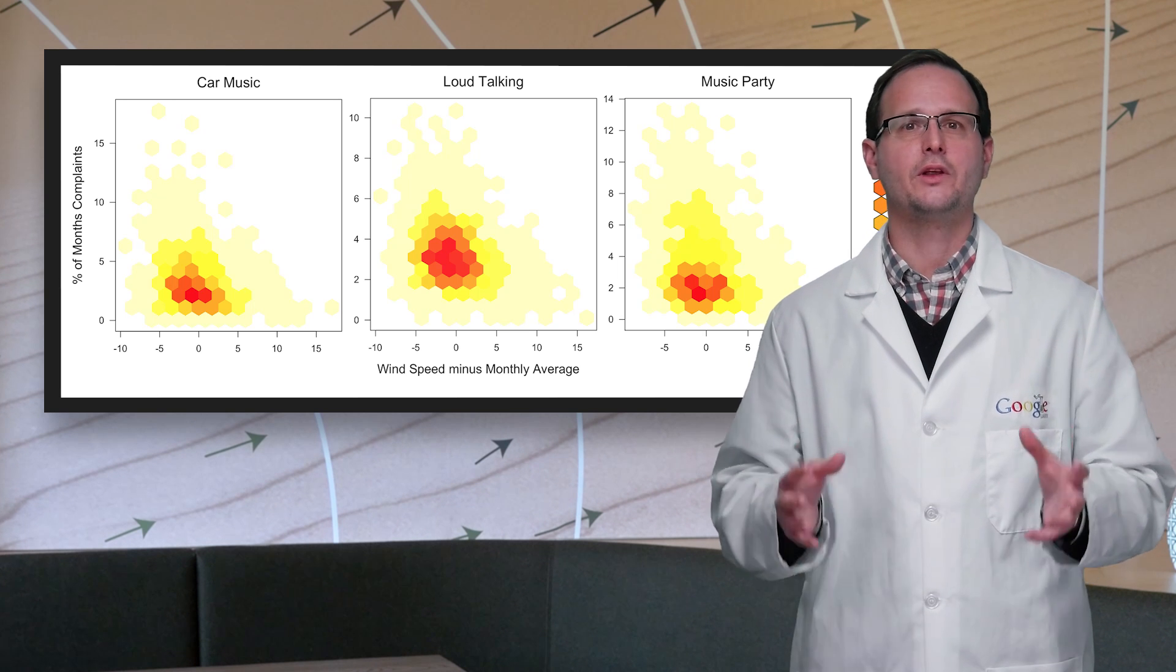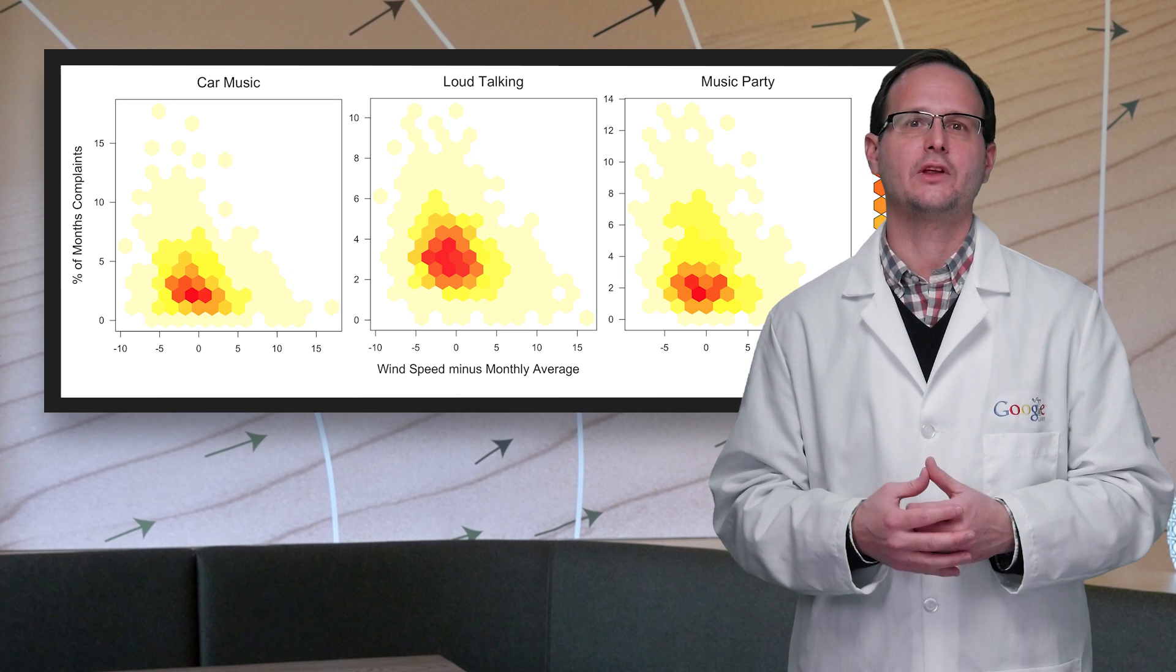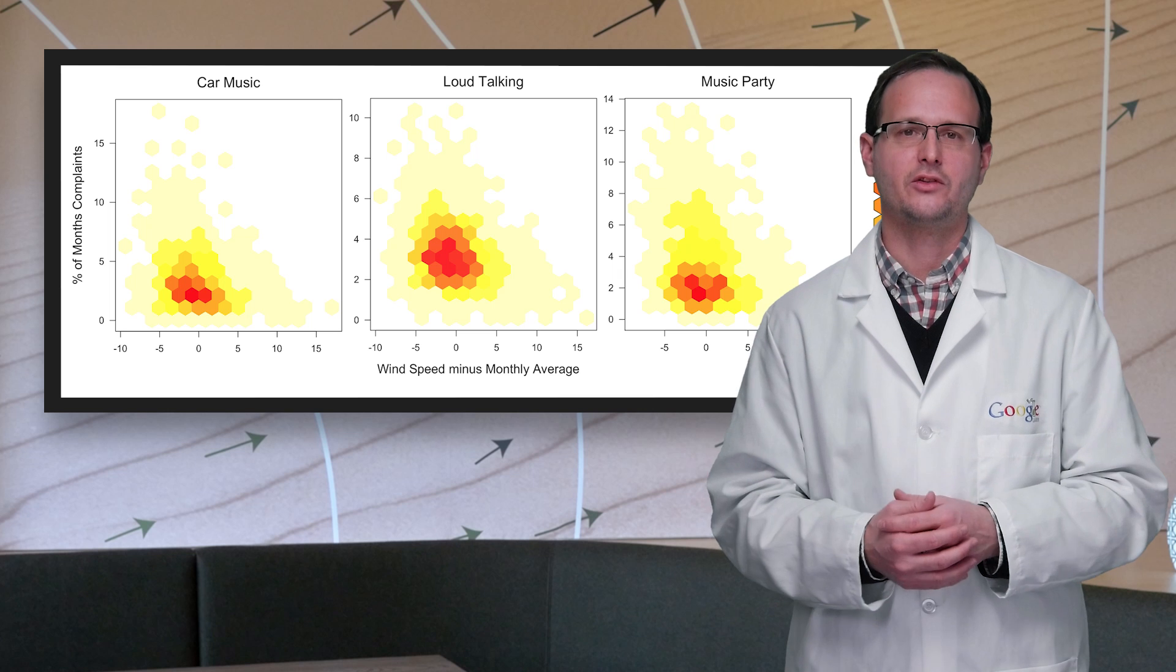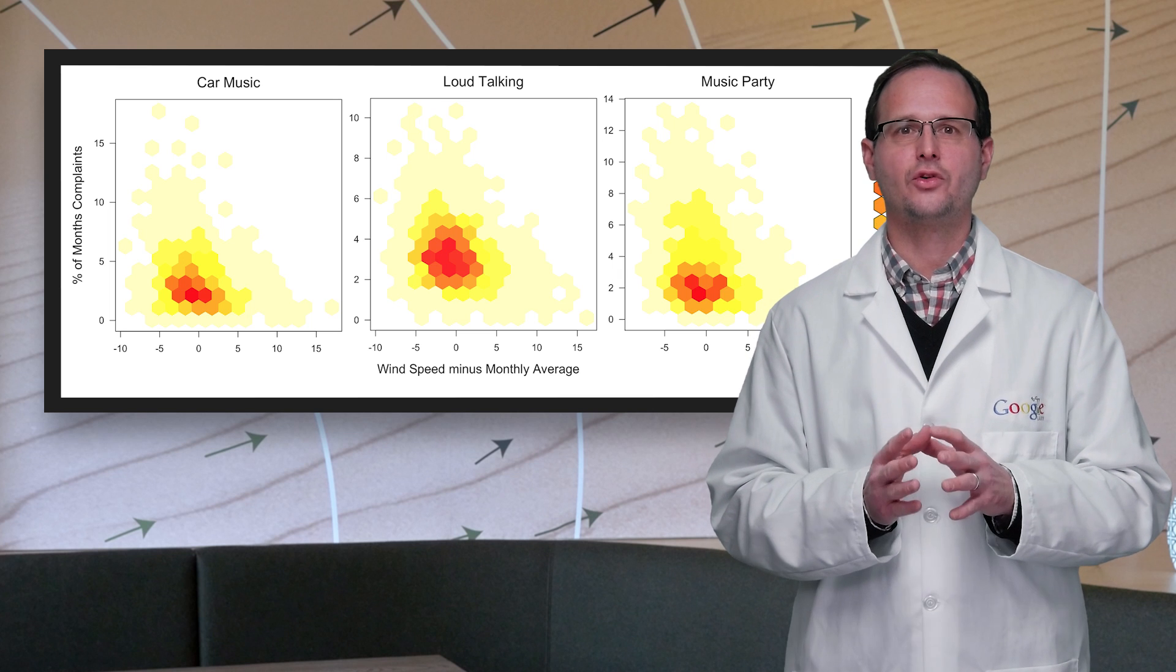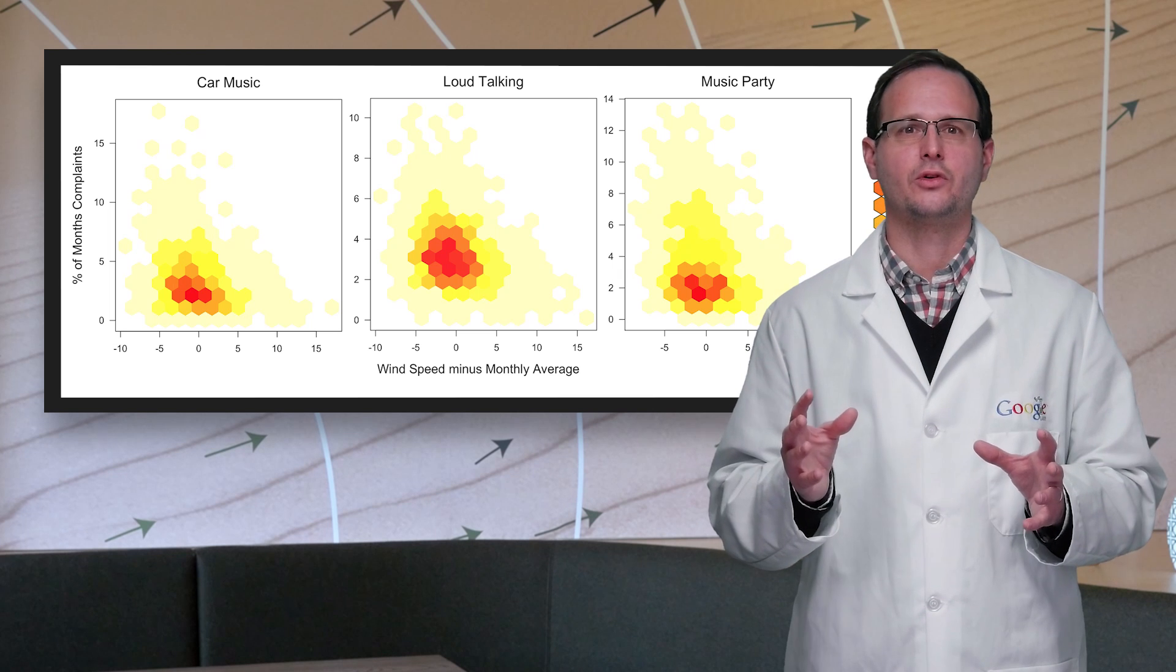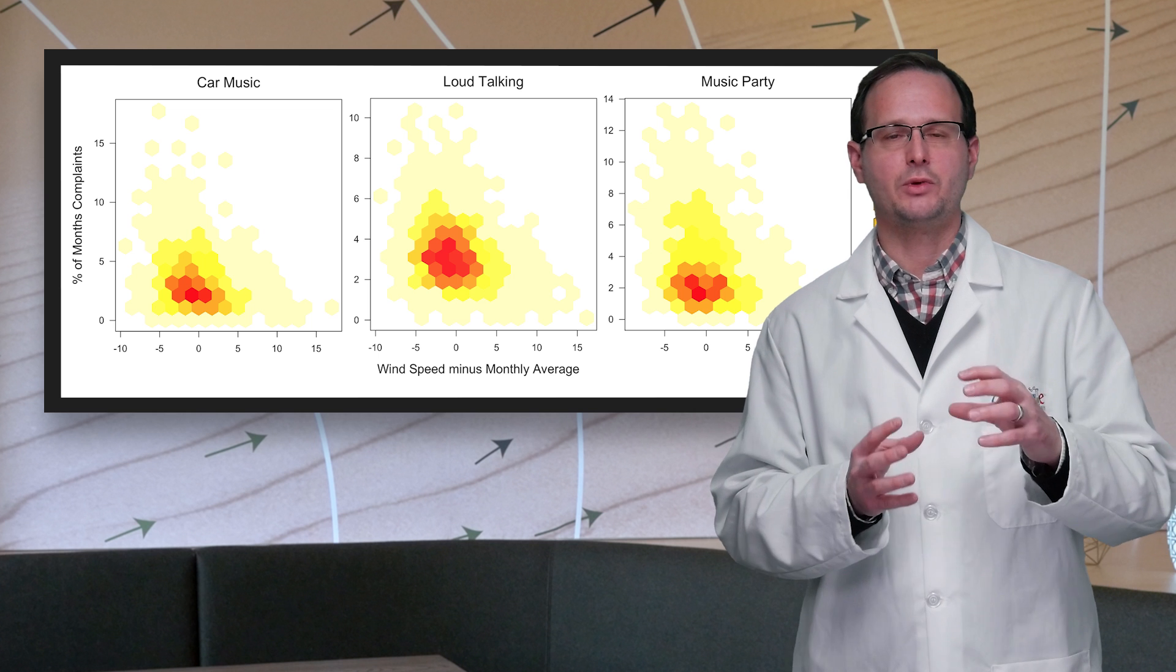Here, we can graph all the points within a given hex and weight the darkness of each hex by the number of points it contains. As a result, we can see a trend from the overall shape of the distribution, as well as a heat map of measurement distribution.